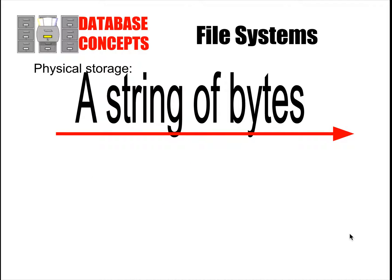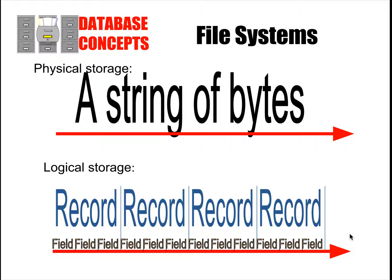Let's talk about file systems. Files are the basic unit of storage that we have on computers, and everything you need to understand physically in a file system is storage — it's nothing more than a string of bits, or basically a string of bytes. Can you imagine trying to read something that was all just together, one after another, all the characters? It would be very difficult to read. So basically what file systems do, when you want to make data more readable, is put it in a format — for instance, when you write a Microsoft Word document, you're putting it in paragraphs and different formats so you can read it.